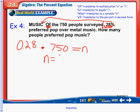So, n equals 210. Are we done? Not yet. It is a word problem. So, we need to say 210 people, and the correct label would be prefer pop music.